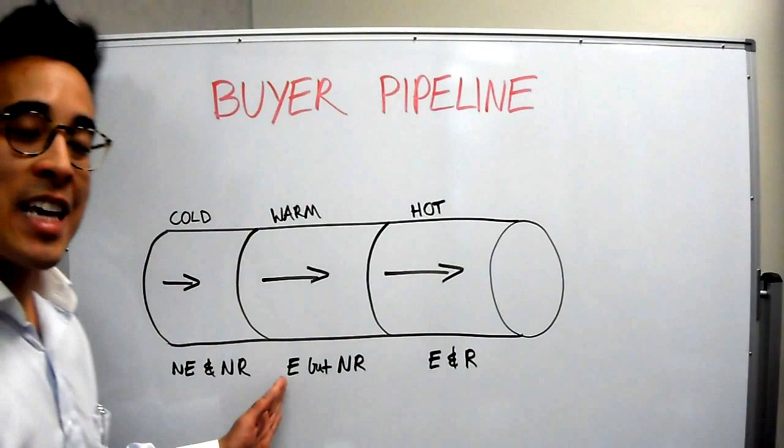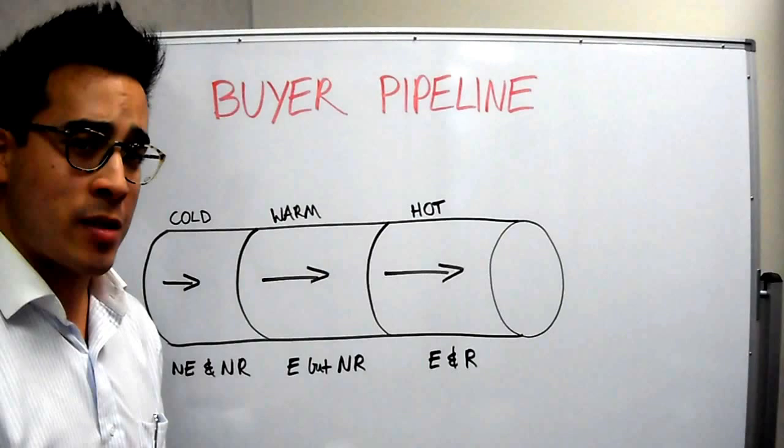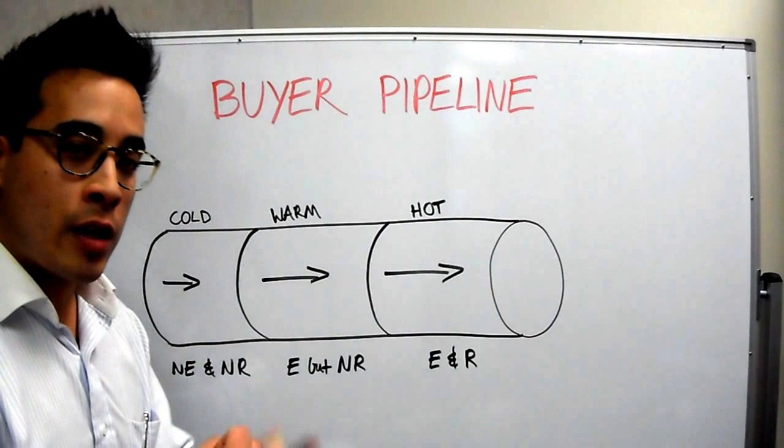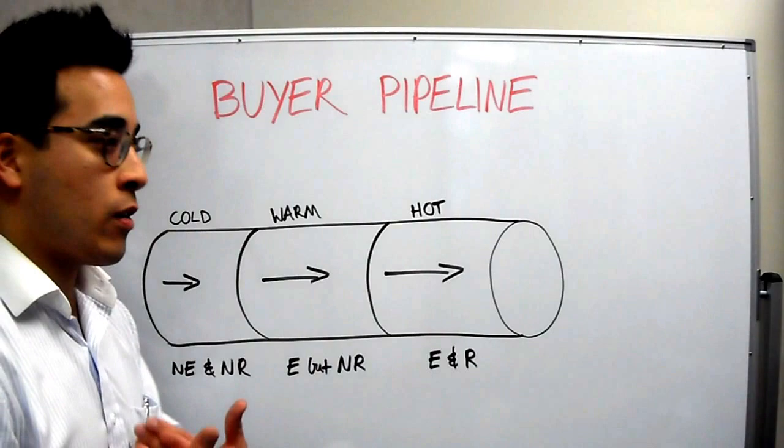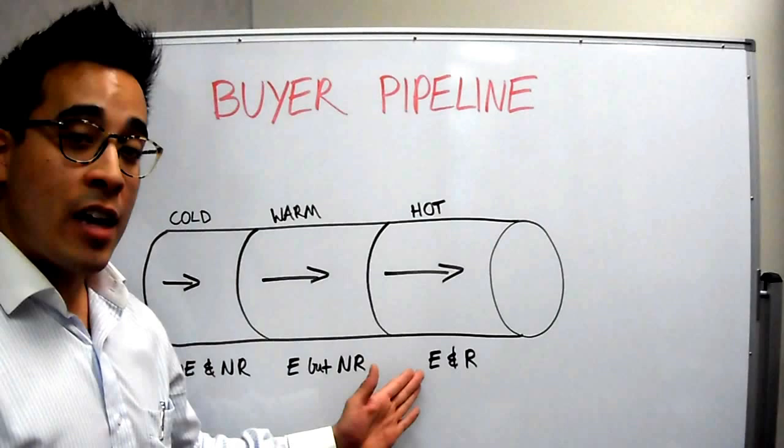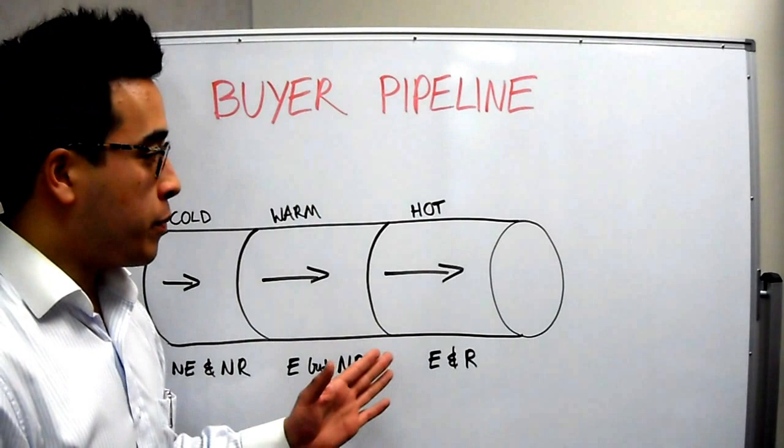A warm buyer is educated but not ready. Today with technology and the internet, it's pretty easy for a buyer to get educated, but they still need to get ready financially or mentally. They need to see enough properties to have a comparison, feel content, and feel that they've done enough homework so they can make that big purchase. A hot buyer is educated and they're ready. Ready is the important one - they're ready to act, they've seen everything on the market.